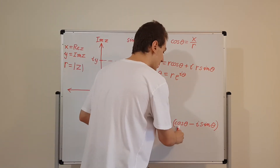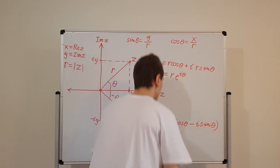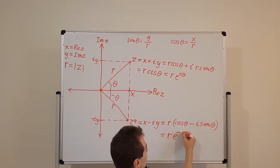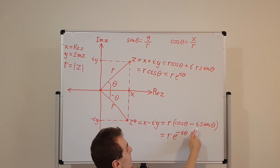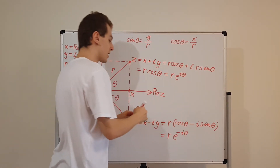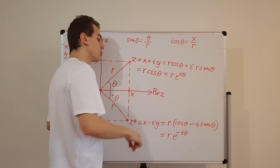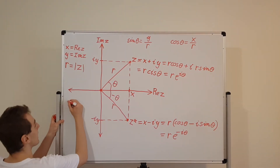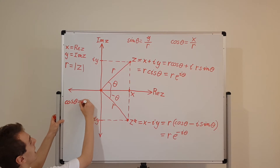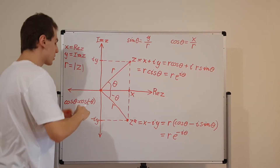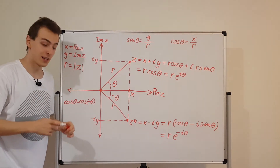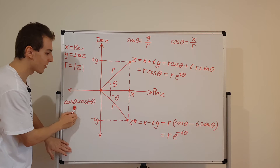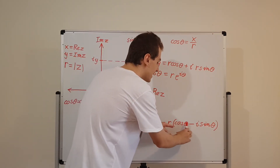We can turn this into an exponential function — it's going to be r e to the minus i theta. Why is there a minus sign? That minus sign has originated from the minus sign in the complex conjugate. If you take theta and substitute it into cosine, it's the same as substituting minus theta into cosine. Cosine of theta is actually the same as cosine of minus theta — the cosine function is a symmetric function — so a negative angle gives you the exact same output.